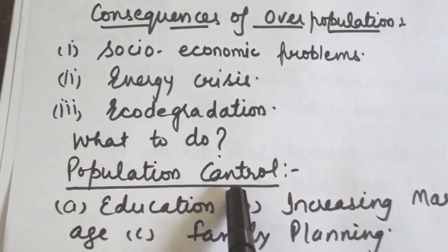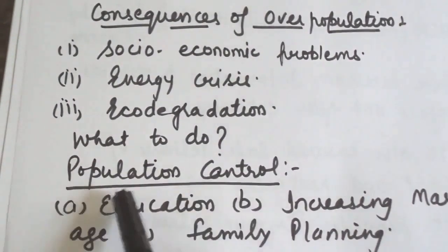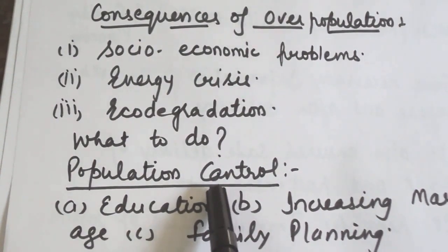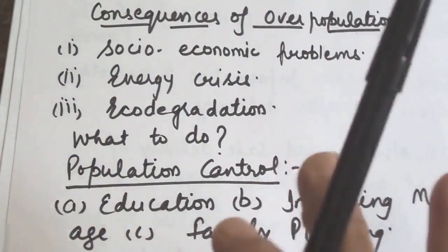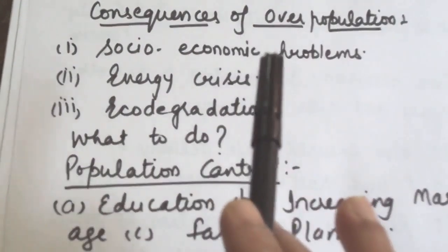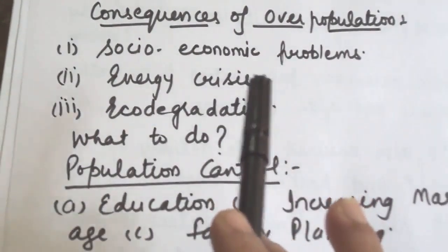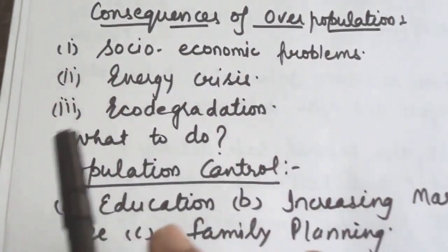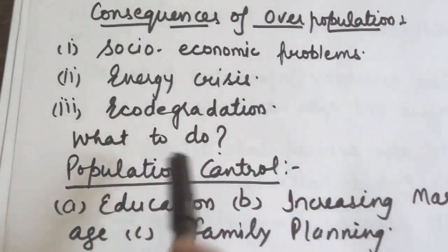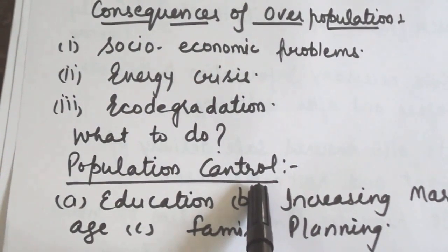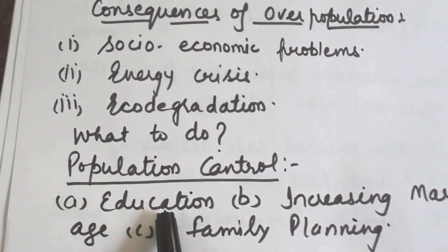To end these consequences, we need population control. Presently human population is doubling every 35 years. If it continues, soon the earth will be overcrowded with human beings. Man has started realizing this and initiated plans to check the rate of population increase. Population is controlled by education — educational institutions and mass media can help educate people.